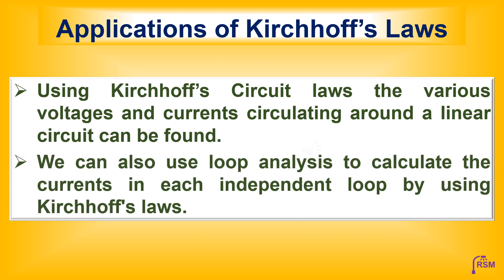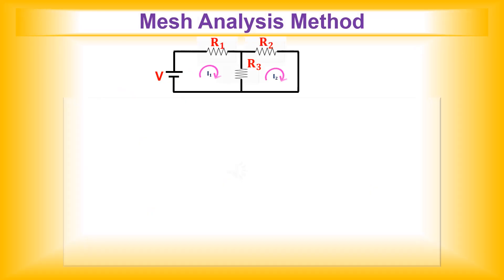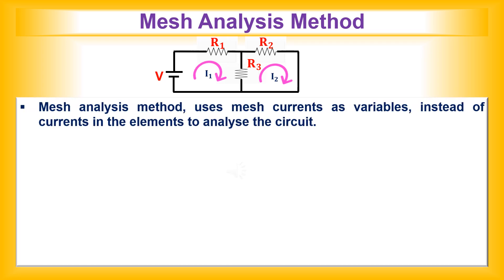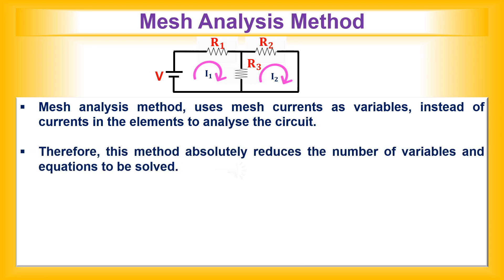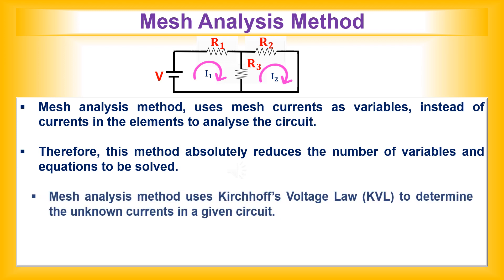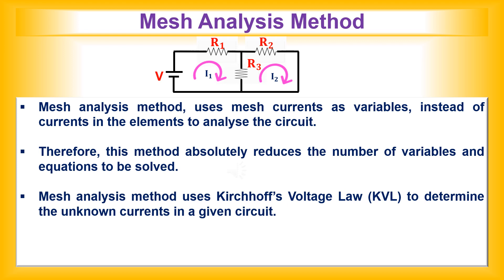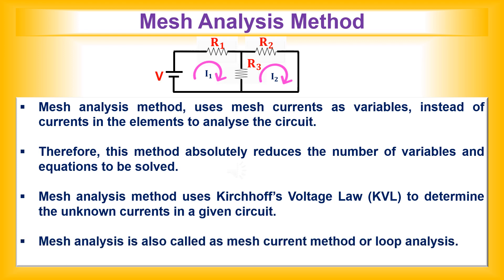The applications of Kirchhoff's laws include finding various voltages and currents circulating around a linear circuit. We can also use loop analysis to calculate the currents in each independent loop. Mesh analysis uses mesh currents as variables instead of element currents to analyze the circuit, which reduces the number of variables and equations to be solved. Mesh analysis uses Kirchhoff's voltage law to determine unknown currents and is also called mesh current method or loop analysis.